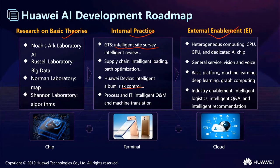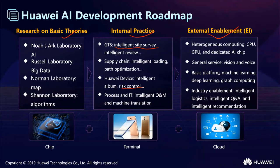The last step is internal enablement, which is what we call EI — enterprise intelligence. Huawei AI provides many practical services for enterprises, such as heterogeneous computing using CPU, GPU, or AI chips to help companies solve computing problems. Huawei AI also provides general capabilities such as vision and voice recognition. Some companies may need a machine learning platform, deep learning platform, or graph computing platform, and you can find all of these on Huawei AI.